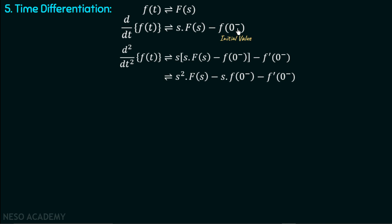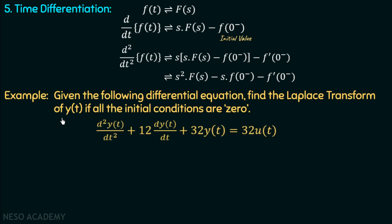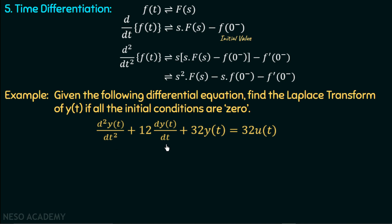Now we are done with the explanation of the time differentiation property. Let us understand this property with the help of an example. Given the following differential equation, find the Laplace transform of y(t) if all the initial conditions are zero. The differential equation is: d²y/dt² + 12·dy/dt + 32y = 32·u(t). We will apply the Laplace transform to both sides using the time differentiation property.